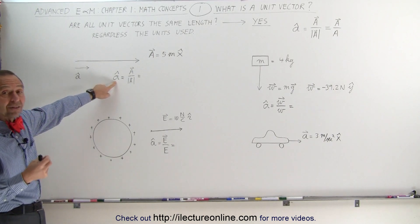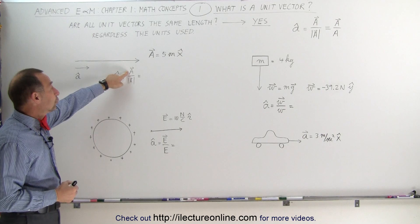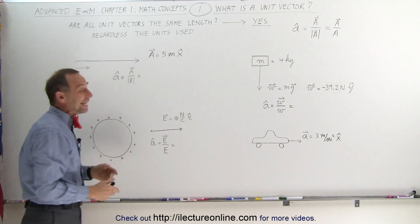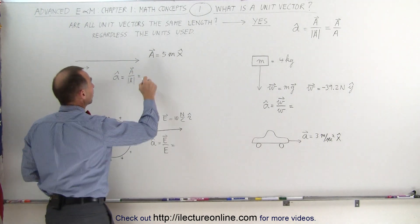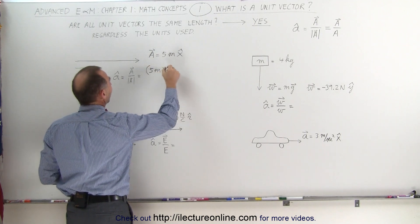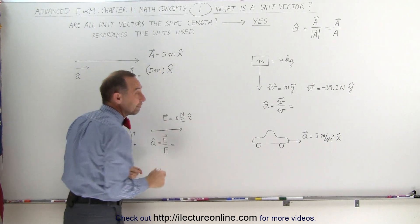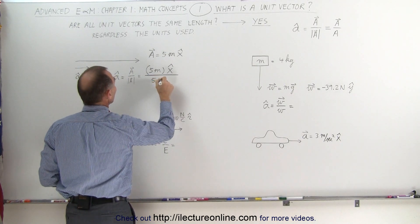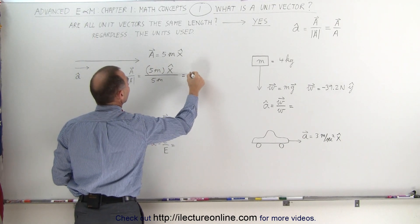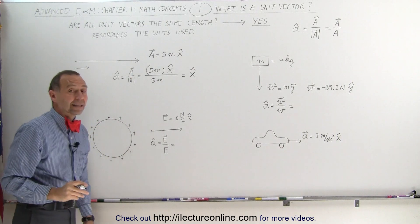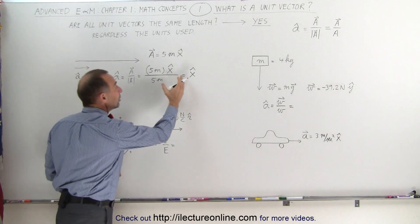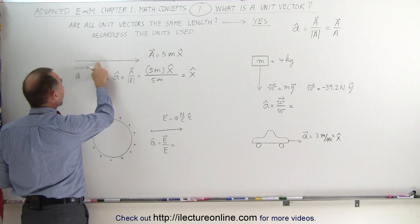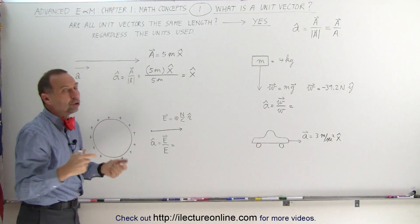Mathematically, if we let this be the symbol for the unit vector, it equals the vector divided by its magnitude. For example, if the vector is a displacement of five meters in the x direction, we can write five meters multiplied by the x direction. If we divide by the magnitude — five meters — the five meters cancel out, giving us x with a circumflex, the symbol for the unit vector. This is one unit long, in the same direction as the original vector.